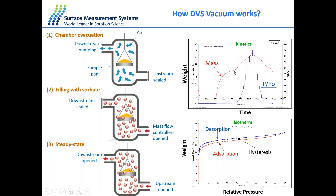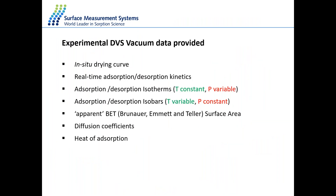Equilibrium points at different pressure steps can be reached in time mode or DMDT (dm/dt) mode. Most often we collect data in DMDT mode, setting a certain equilibrium threshold value — when this threshold is met, the software automatically proceeds to the next stage. The system allows collection of important in-situ data: outgassing curves, real-time adsorption-desorption kinetics, and adsorption-desorption isotherms. From kinetic data and mass equilibrium points at different relative pressure steps, we calculate the isotherms. We can also collect adsorption-desorption isoterms at different temperatures to calculate heat of adsorption and kinetic diffusion coefficients.